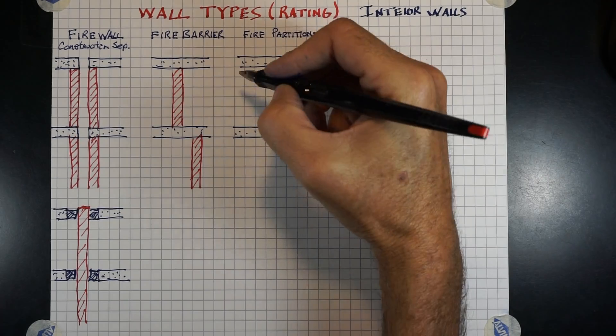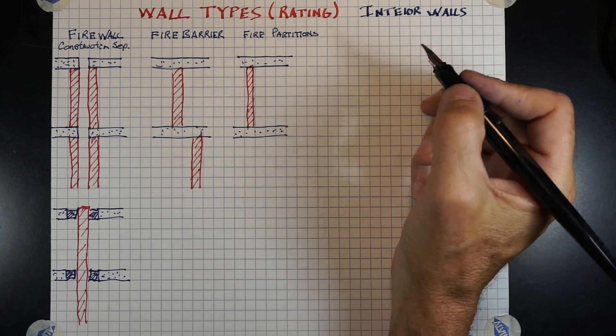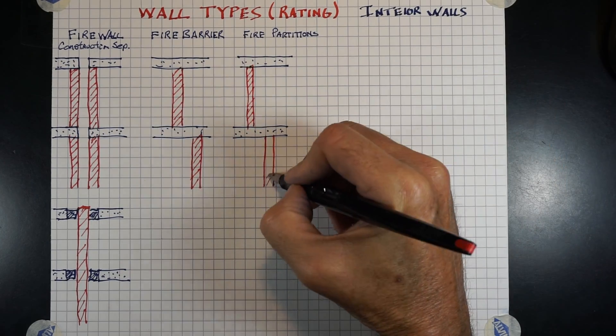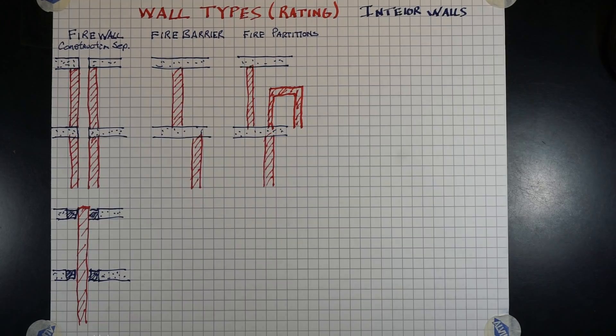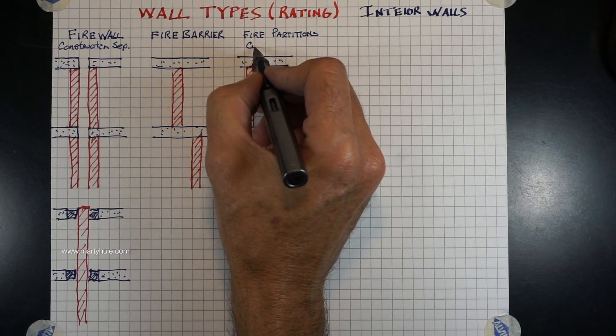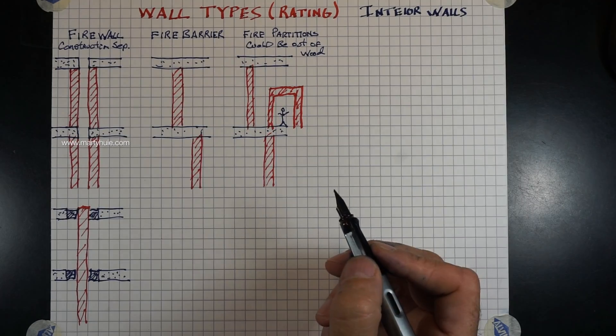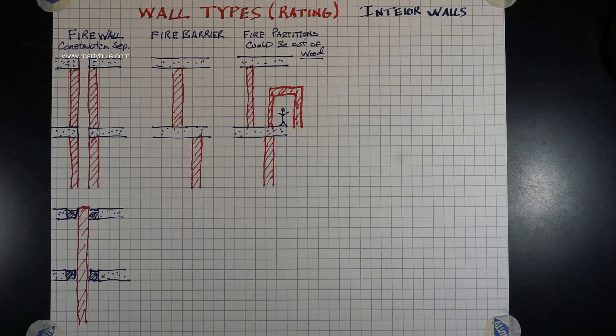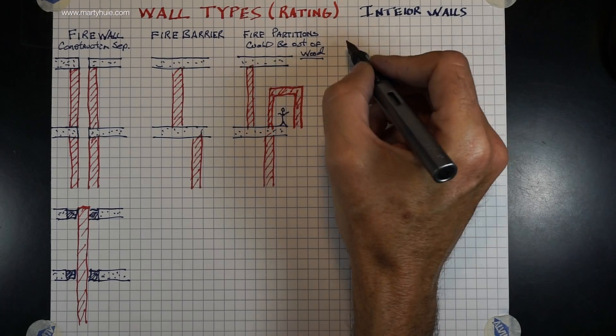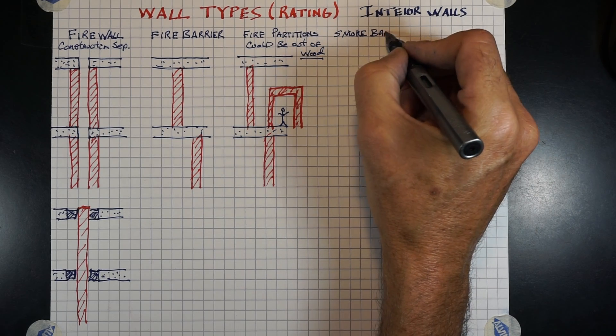The difference between a fire barrier and a fire partition is a fire partition can be made out of wood. A fire partition could actually create a tunnel such as this and it not be a floor above. The code actually states with a fire barrier, it must go from floor to underside of structure or floor above. You cannot have a tunnel such as this with a fire barrier, only a fire partition.